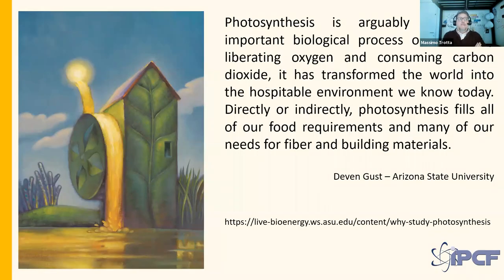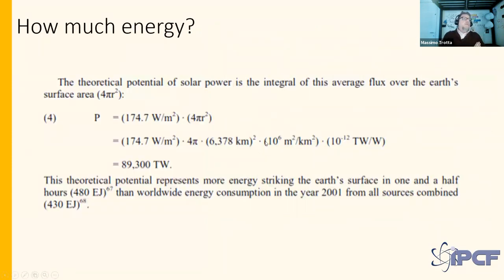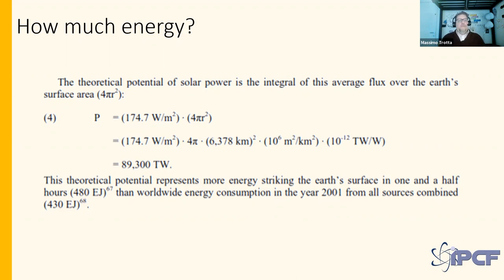Quoting Devon Gust: photosynthesis is arguably the most important biological process on Earth. The theoretical potential of solar power is given by the integral of the flux over the surface of the Earth. This calculation yields roughly 90 terawatts — even in one hour, this represents roughly the amount of energy used in the entire year of 2001 from all combined energy sources. We have here a powerful energy source.